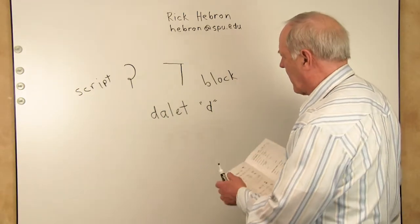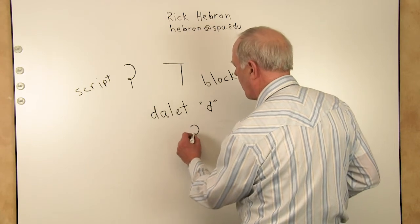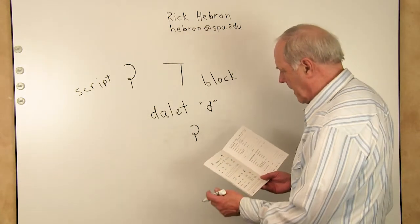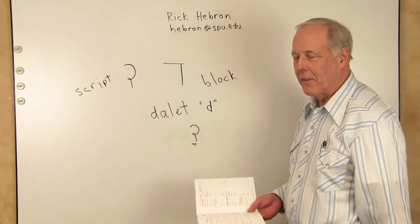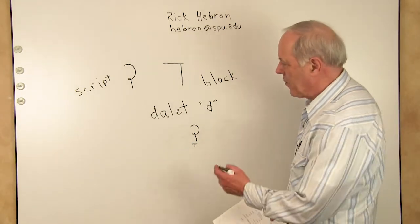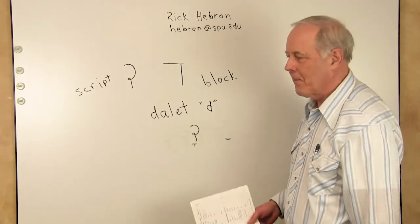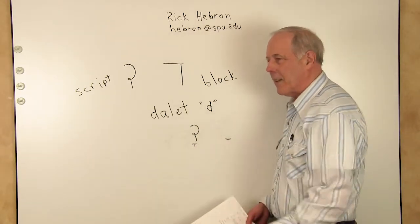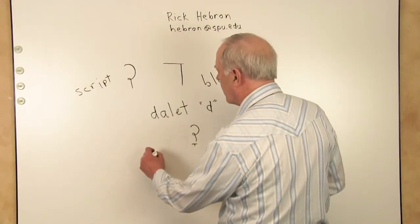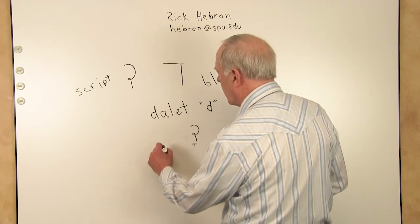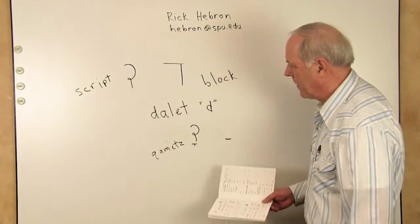So now we're going to learn a vowel to go with it. We take a Dalet and we put a vowel like that which goes A. Last week we learned the Patach that goes A. Now we learn the Kamatz which goes A.